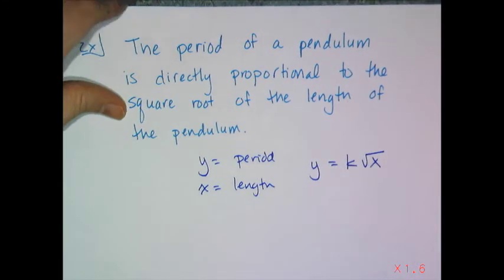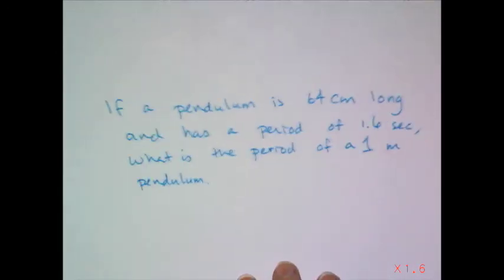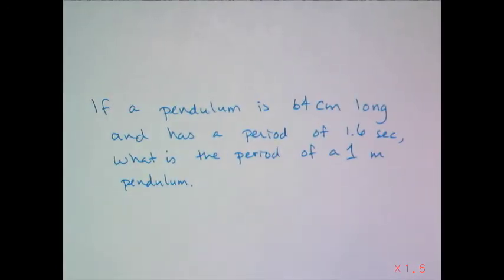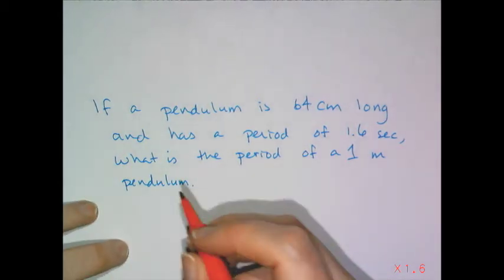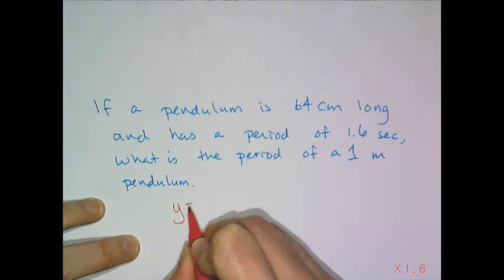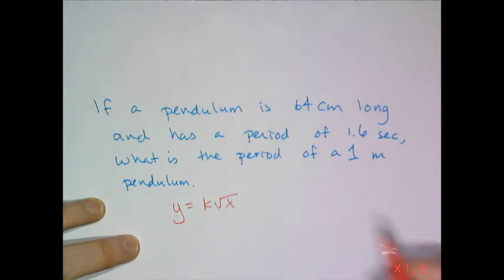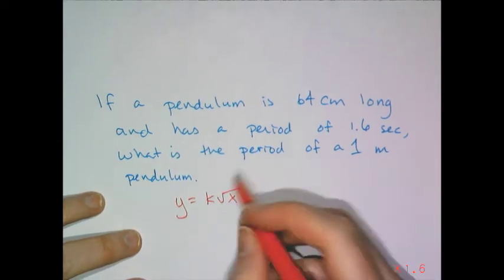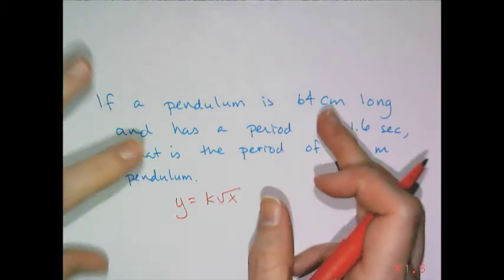Here's another example. If a pendulum is 64 centimeters long and has a period of 1.6 seconds, what is the period of a 1 meter pendulum? I know that generically speaking, from the law I just talked about, it's y equals k square root of x is the generic formula. And I just need to find k for this particular setup.